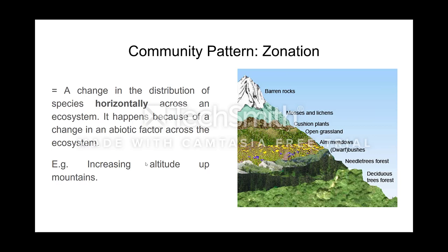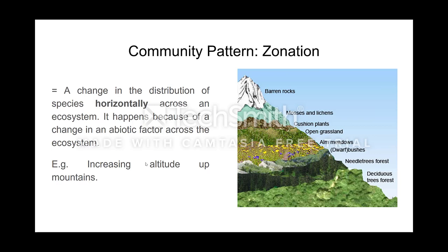When we start talking about patterns and how those things manifest, if you look at the diagram here you have a picture of a mountain going from a low altitude gradually up to a higher altitude. There will be a change in abiotic factors as we go from near sea level at the base of the mountain to the upper parts. Things like exposure to wind, the amount of freely available water, and temperature ranges will all change. That causes a change in the distribution of species horizontally across that ecosystem, happening because of a change in an abiotic factor — in this case, altitude.